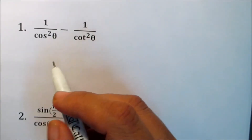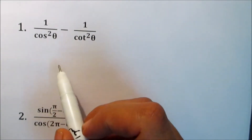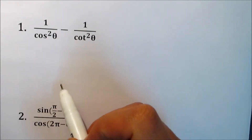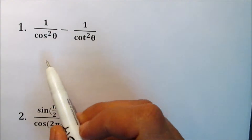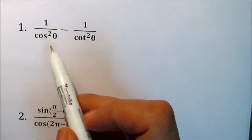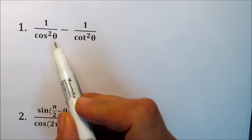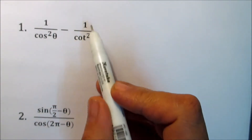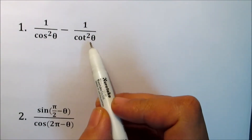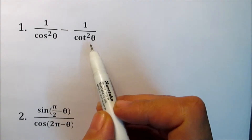Now, examples. Simplify the following trigonometric expressions. Number 1: 1 over cosine squared theta minus 1 over cotangent squared theta.